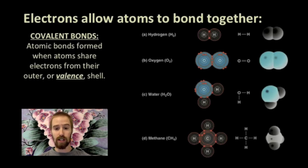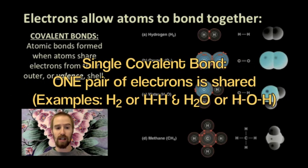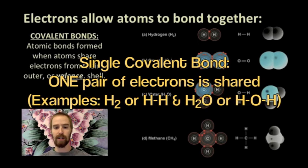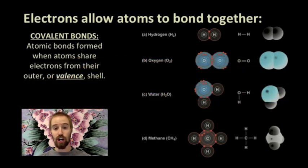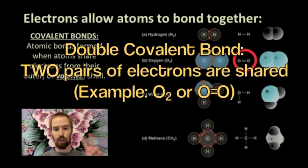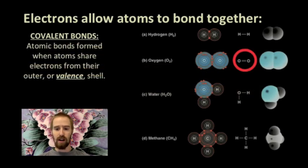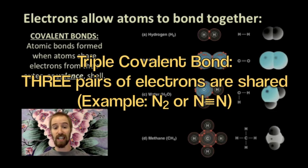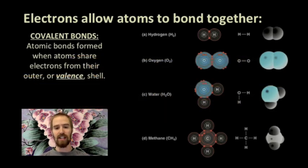If two atoms are sharing two electrons, as was the case with hydrogen and oxygen in a water molecule, we call this a single bond because each individual atom is contributing only one electron to the covalent bond. If two atoms are sharing four electrons, as is the case with the two oxygen atoms we see here in the oxygen gas molecule, we call that a double bond because each individual atom is contributing two electrons to the covalent bond. There are also triple bonds, in which each atom contributes three electrons to the covalent bond, for a total of six shared electrons.